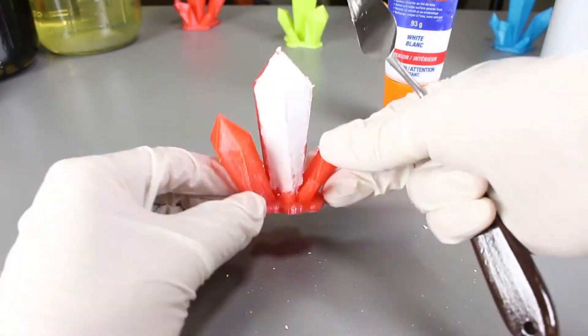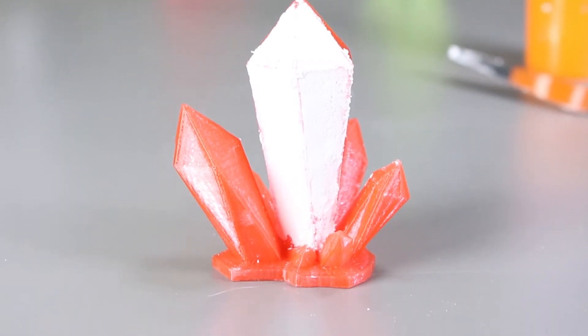Afterwards, let it dry for 15 minutes and we can start sanding the uneven areas on the model.